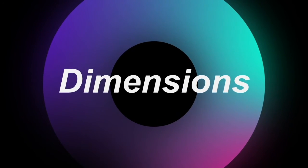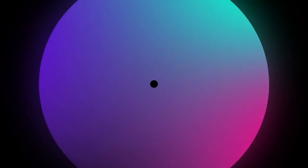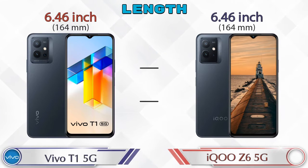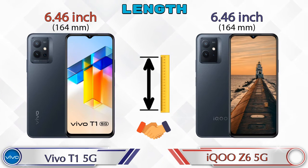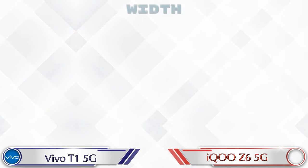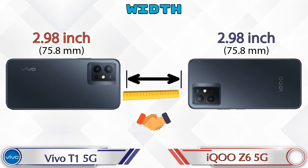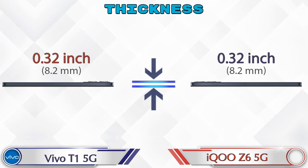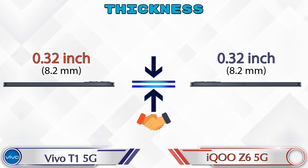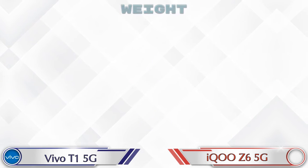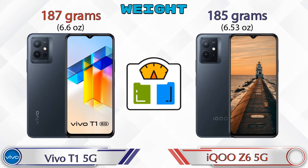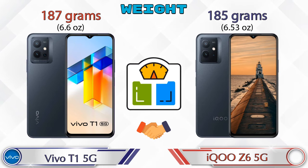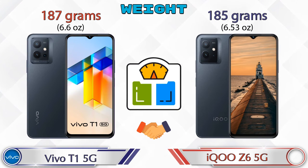Now let's check the detail about dimensions. The length of both phones is the same at 6.46 inches. The width is also the same in both phones at 2.98 inches. Both phones have the same thickness of 0.32 inches. Talking about weight, the T1 5G is 187 grams and the iQOO Z6 5G is 185 grams, which are almost similar.